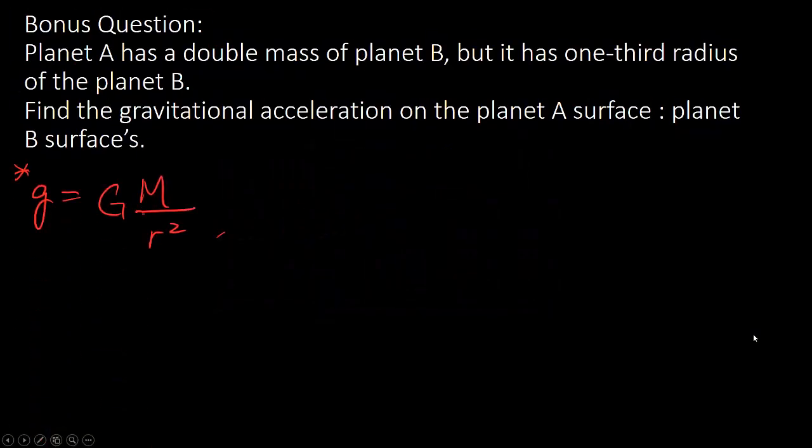So here is a bonus question for you. As I said, if you want to study physics in IB or A level, this kind of question is pretty, pretty common in the future. So you can use this equation I show here, which is the gravitational acceleration equal to universal constant and also the mass of the planet and also the radius of the planet. You may try to pause the video and try to do it now. Okay, here is the solution.